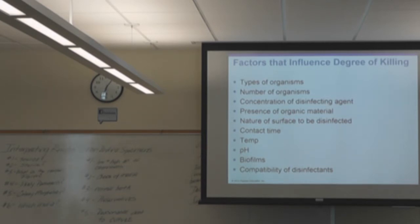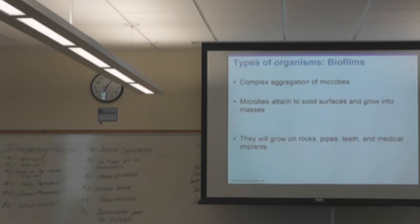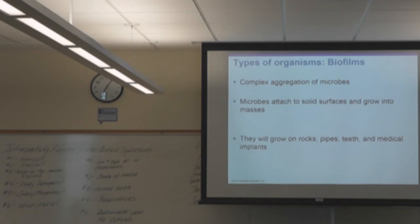Factors that influence the degree of killing — there's a big list, all dependent on the organism's biochemical composition and protective mechanisms. Let's talk about biofilms: a community or aggregation of microbes that attaches to a solid surface and becomes its own little community. We have them on our teeth, on rocks, and pipes. The big problem is when biofilms form on medical devices — that happens a lot with Staph epidermidis. If that happens, the patient is on antibiotics for months at a time.